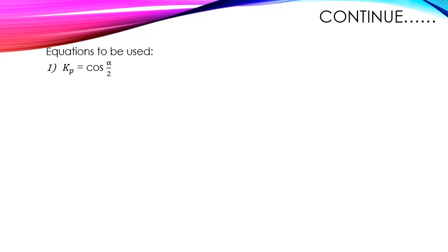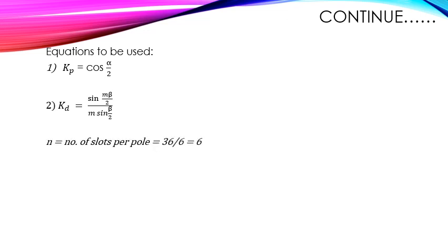The pitch factor, denoted by kp, also known as the coil span factor, is given by: kp = cos(α/2). The distribution factor kd = sin(mβ/2) / (m·sin(β/2)). Here m is the number of slots per pole per phase. Number of slots = 36, number of poles = 6, number of phases = 3, so the number of slots per pole per phase = 36 / (6 × 3) = 2.